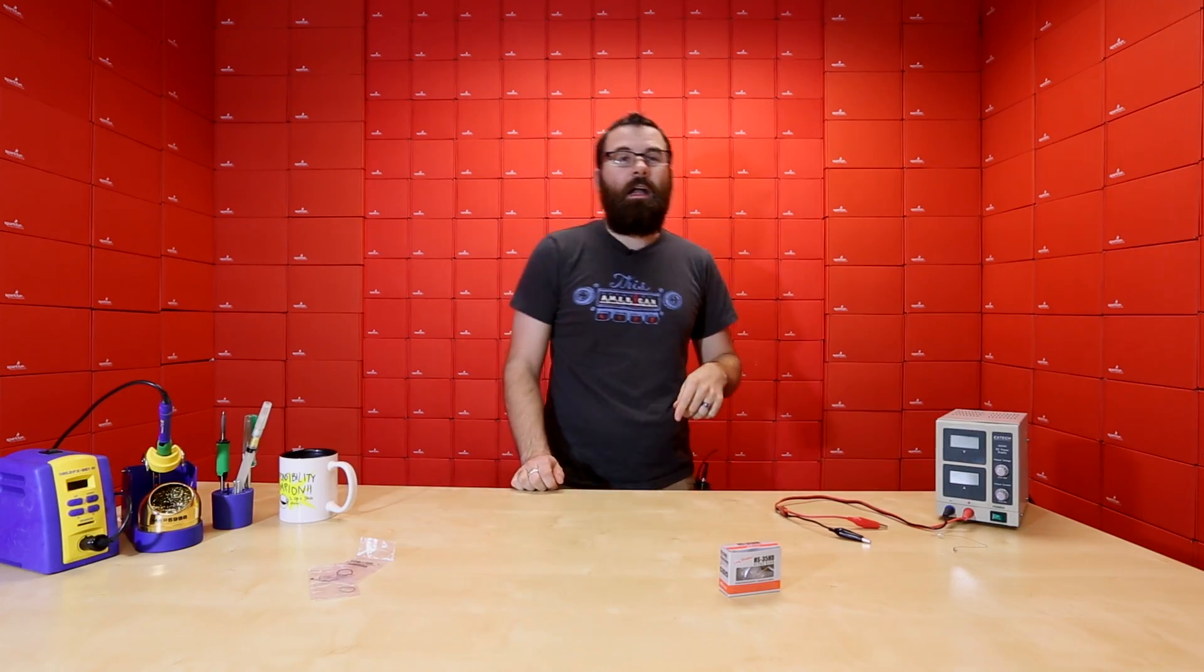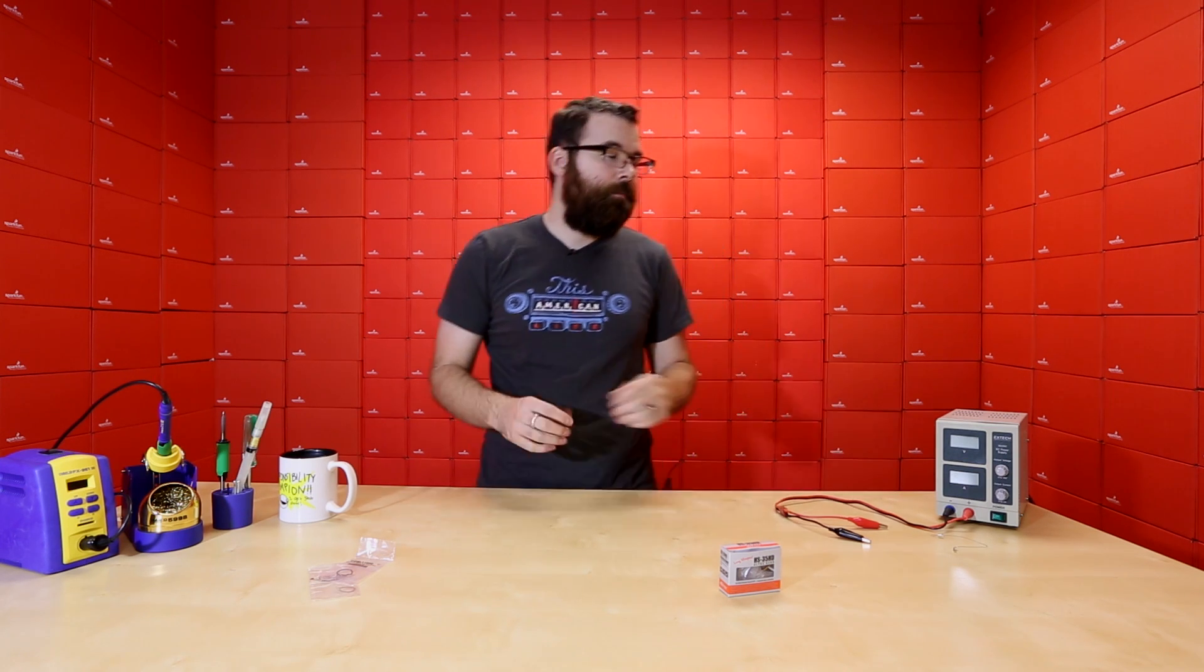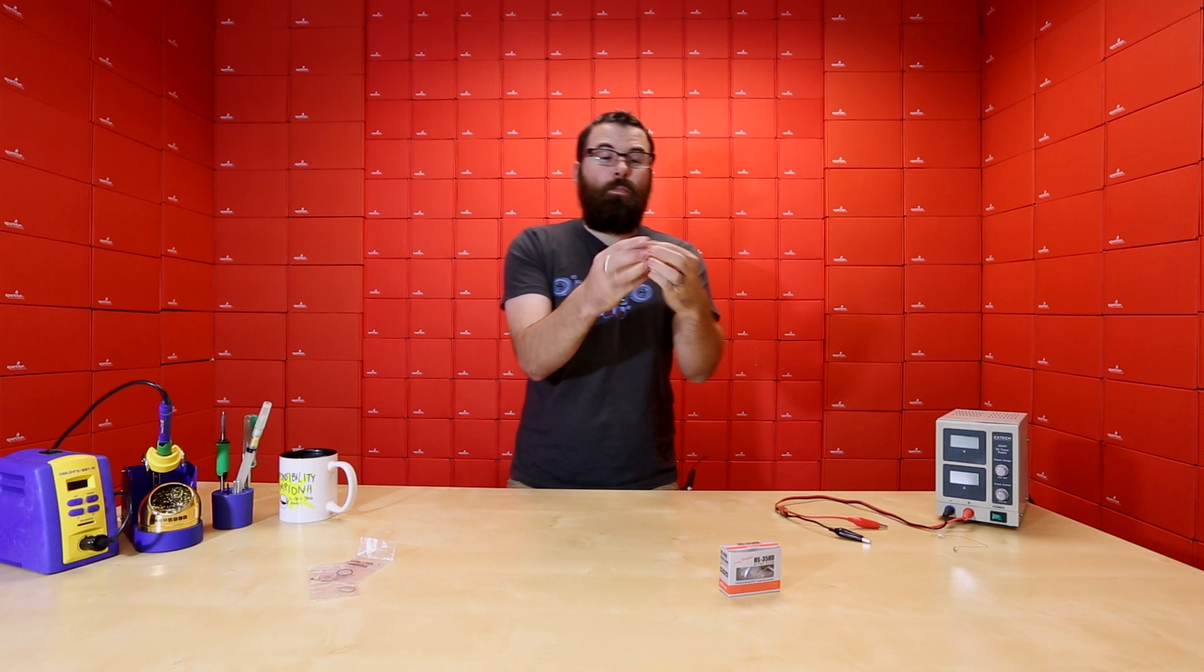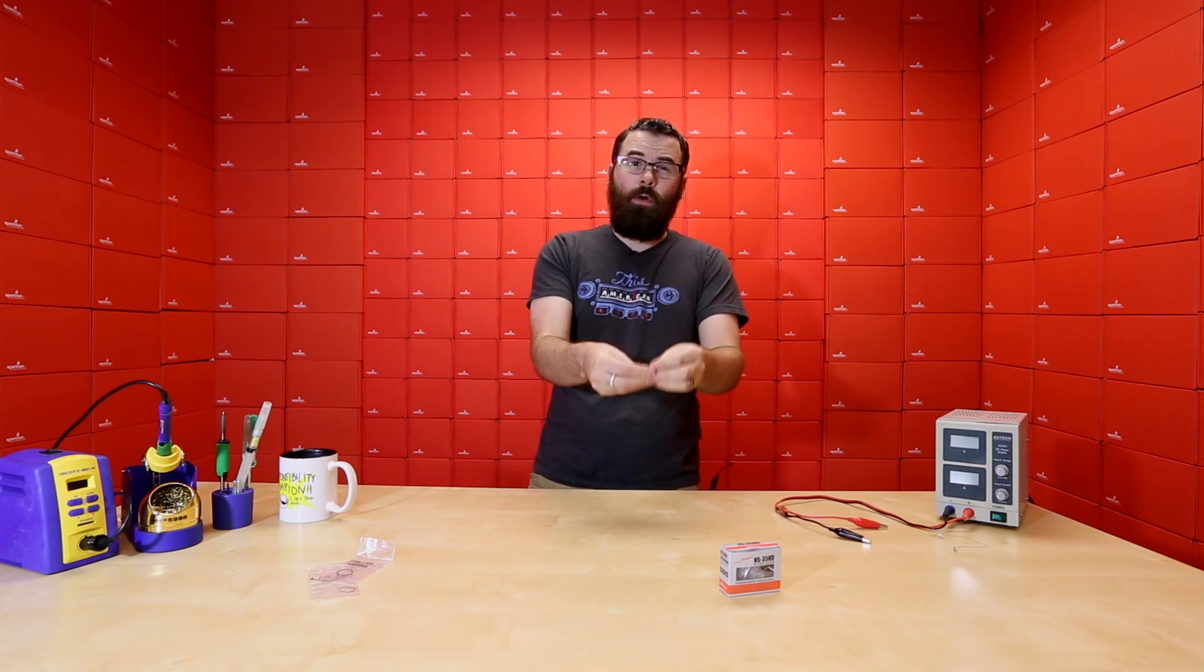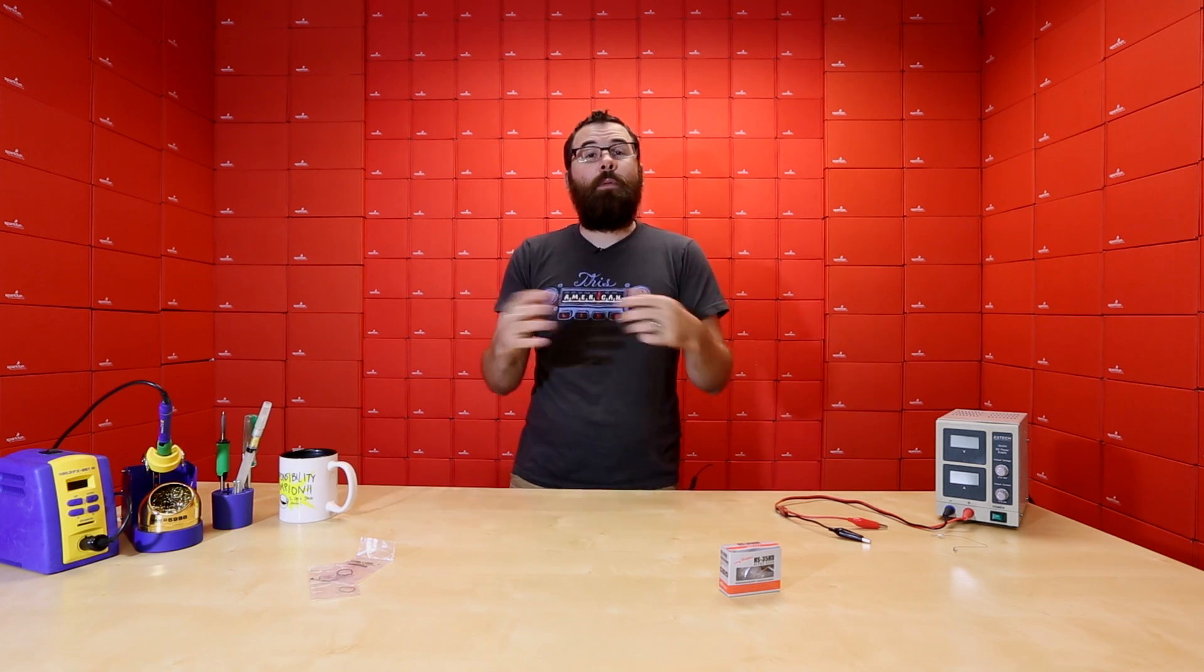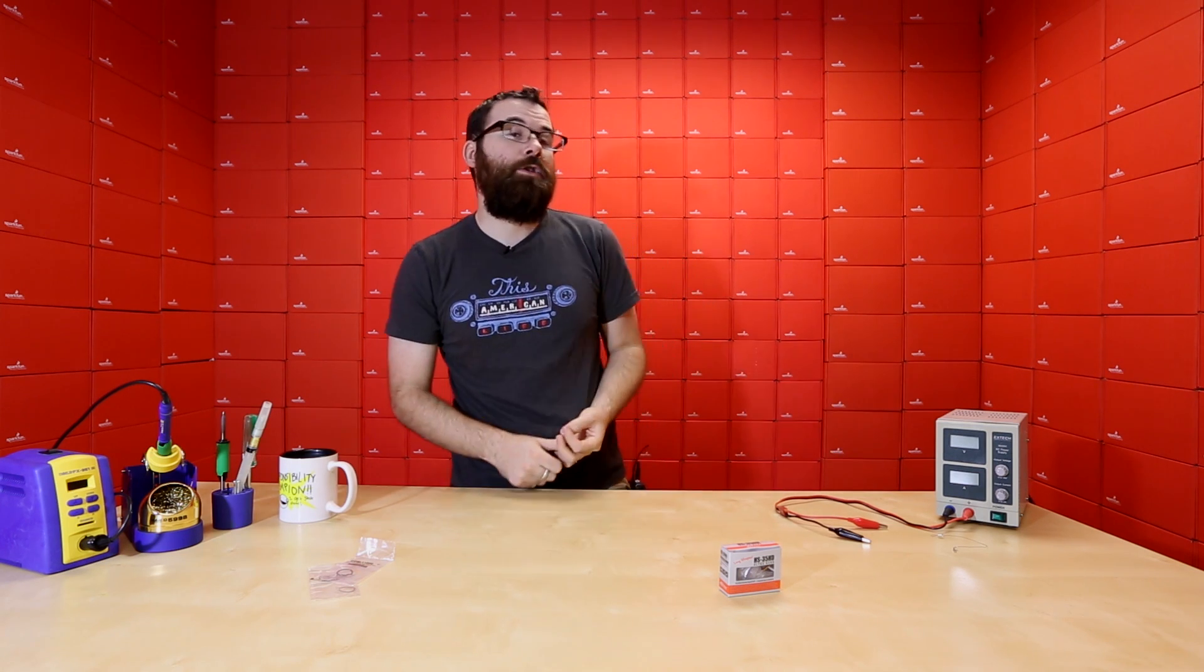Now this does get kind of hot when you turn it on because it's drawing over an amp. So theoretically, when this was hot, I could bend it into that jumbled shape, and then turn off the power and then straighten that out. And then when I apply power, it's going to go back to that jumbled shape.